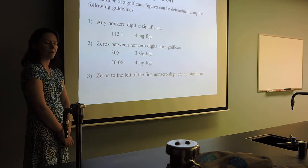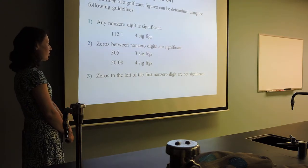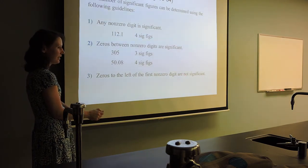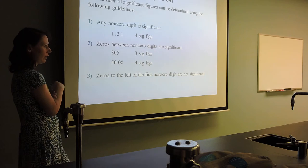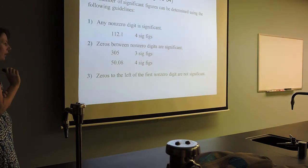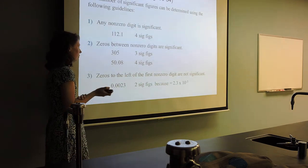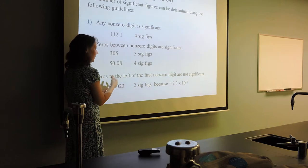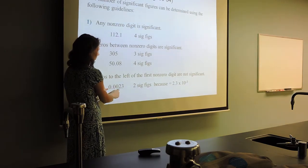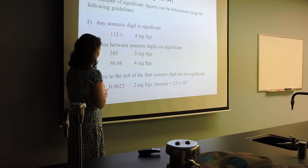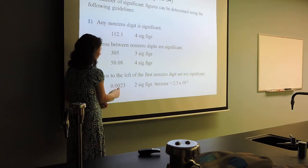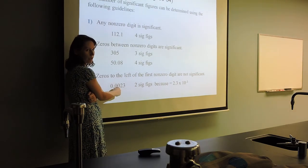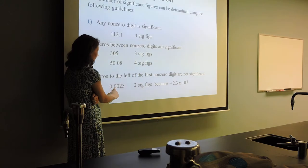When things get messy is when zeros come into the picture. Zeros to the left of a non-zero digit are not significant — zeros to the left are not significant, not, not, not. Why? Let's look at this measurement: if I go to my balance and put something on it, this would be a very small mass — 0.0023 grams. Why are these zeros insignificant? Because these zeros are just placeholders.